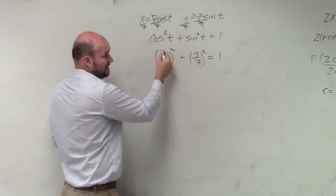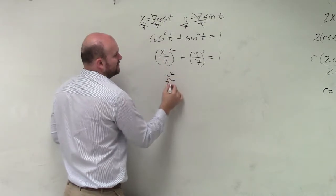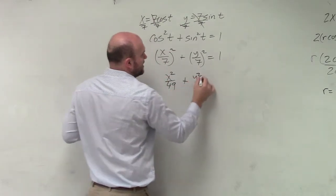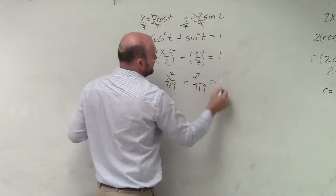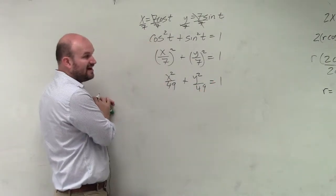Now when I square that, you have to square the numerator and square the denominator. x squared over 49 plus y squared over 49 equals 1. That's perfectly fine.